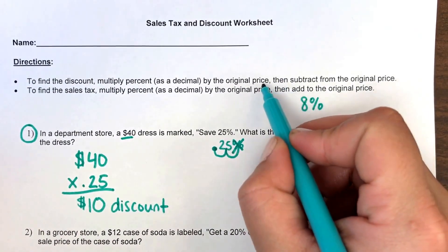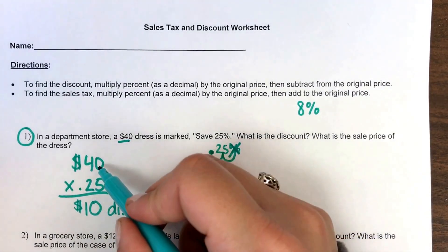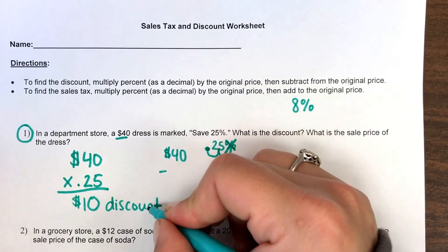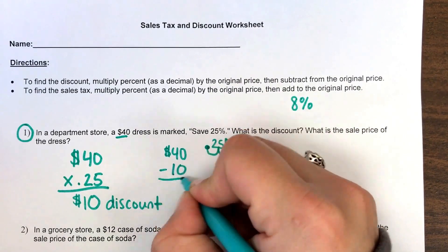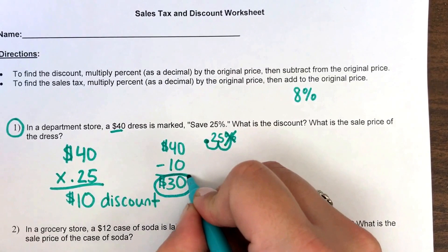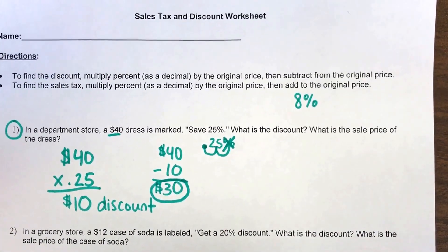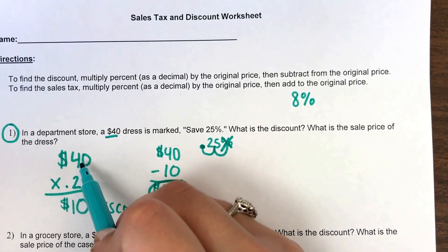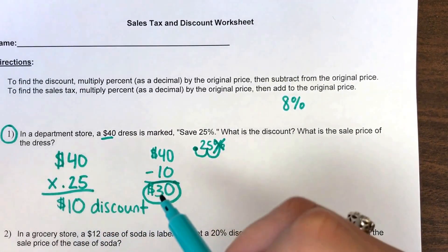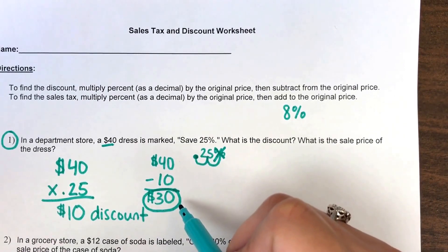The last part of the first step says subtract this discount from the original price. We know $40 was our original price, and they told us to keep our $10 discount. So I subtract 10 from 40 and I'm left with $30 as the price of the item after the discount — that's the discounted price.